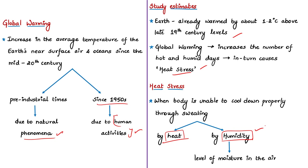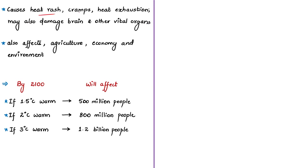Heat stress is caused not just by extreme heat but also by extreme humidity. When humidity is high, the air is already saturated with moisture, so sweat evaporates more slowly — the body's natural cooling system cannot work, causing body heat to increase. Heat stress ranges from milder conditions like heat rash and heat cramps to severe conditions like heat exhaustion. Rising global temperatures cause heat stress not just in humans — they also harm agriculture, the economy, and the environment.